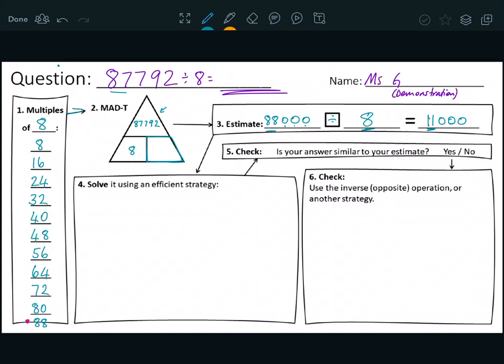So I've done my MAD T, I've done my estimate, and now I'm going down to solve it using my short division. Short division is called short because you don't have to do all your calculations down below. So eight is the number I am cutting the big number into. So I've got 87,792, and I'm dividing that by eight.